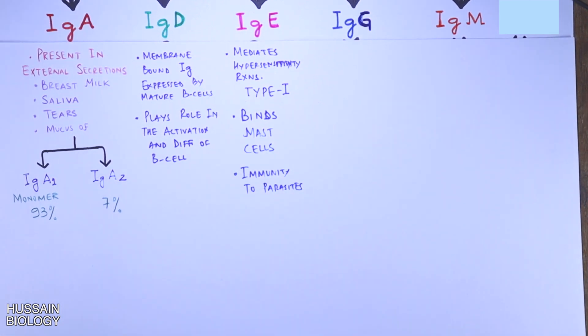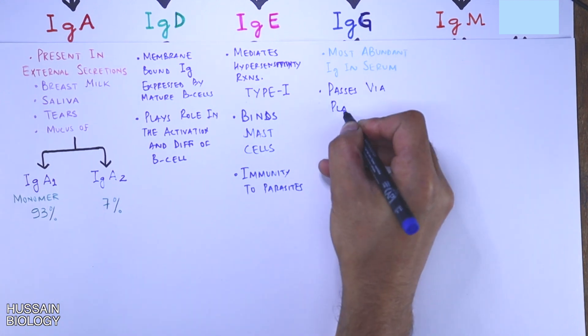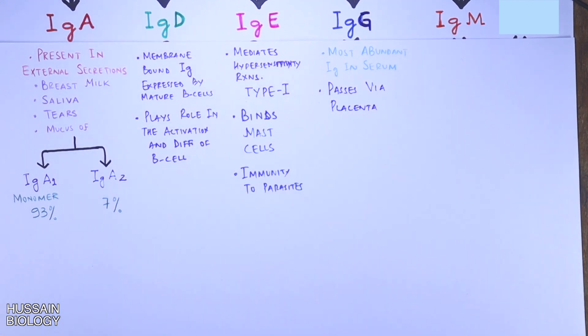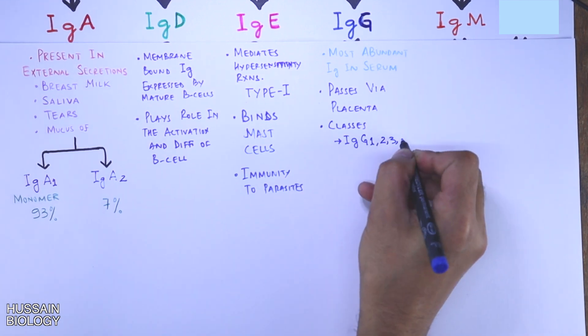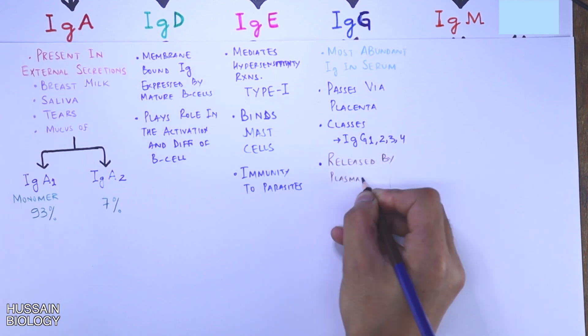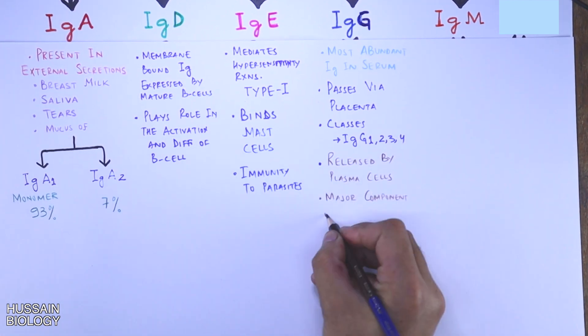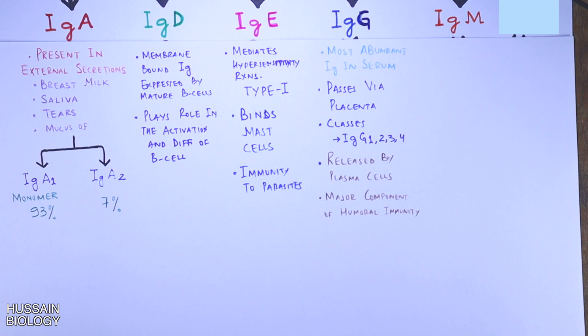Moving towards IgG antibody, which is the most abundant immunoglobulin in serum, and this is the only immunoglobulin that can pass through the placenta towards the fetus, and it too has four forms: 1, 2, 3, 4. It's released by plasma cells and is a major component of humoral immunity. It also plays role in ADCC and mediates classical pathway.